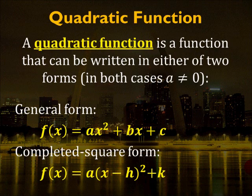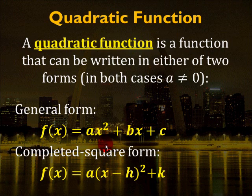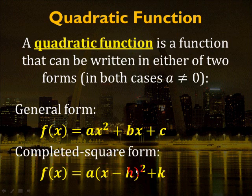A quadratic function is a function that can be written in either of two forms. In both cases, a can't be equal to 0, because if a were equal to 0 you wouldn't have a quadratic function — you'd have a line. The general form is f(x) = ax² + bx + c, where a goes with x², b goes with the linear x, and c is constant. You can also write it in completed square form: f(x) = a(x - h)² + k.